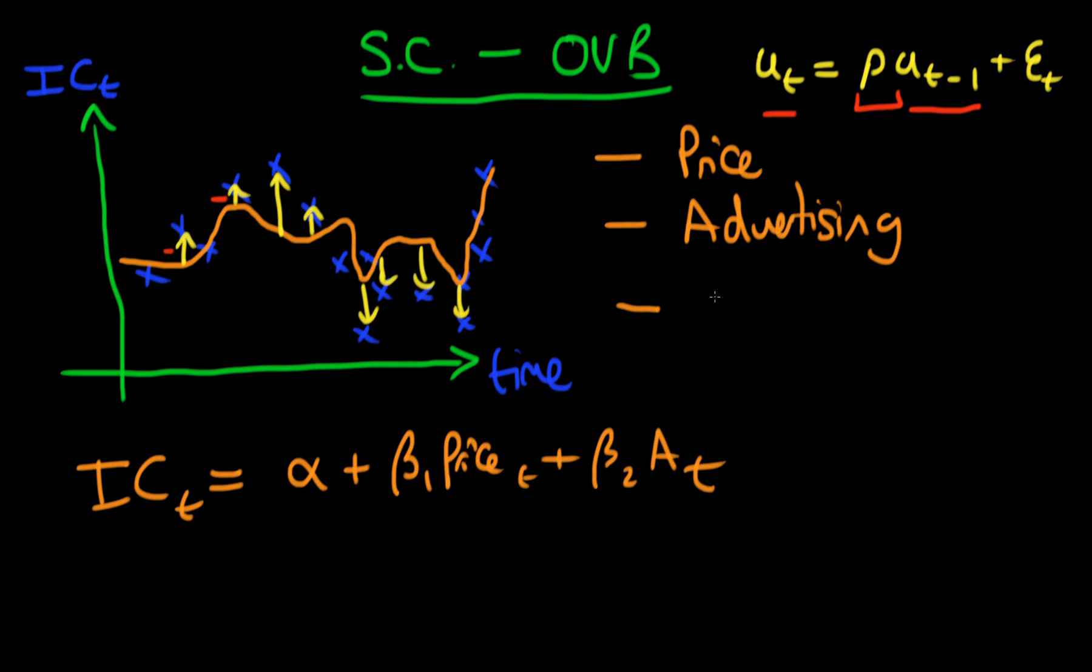The variable I was thinking about was actually a seasonal variable—this could be a measure of temperature or the month of the year. It's very likely that ice cream sales are seasonally trended, and our data shows that. We know that advertising is correlated with the time of year because ice cream companies tend to advertise at times when they're more likely to sell more product, likely hotter times of the year.